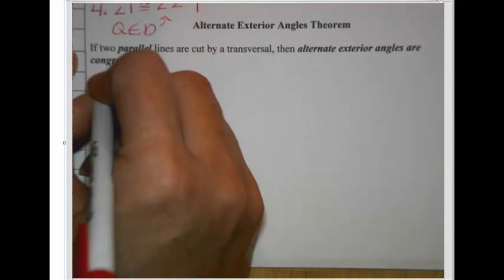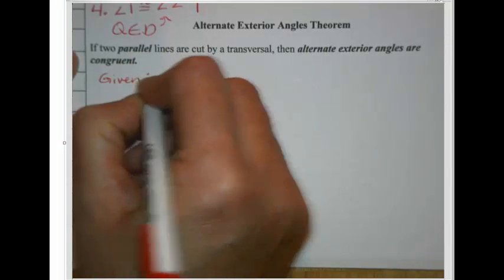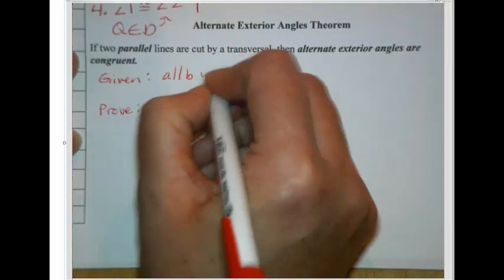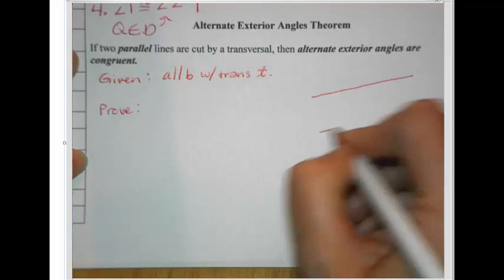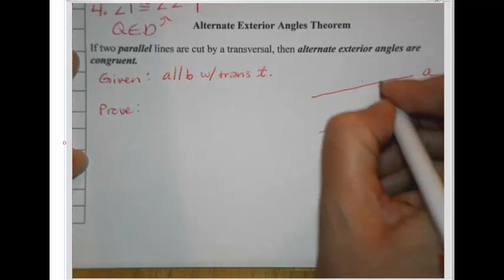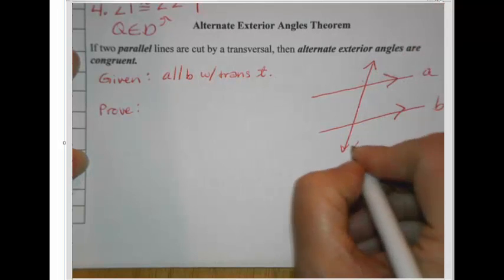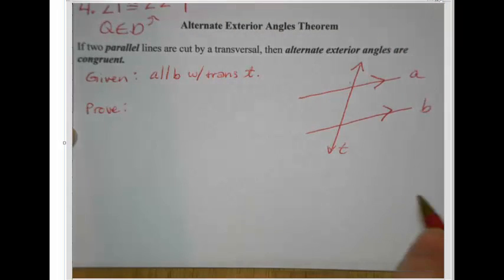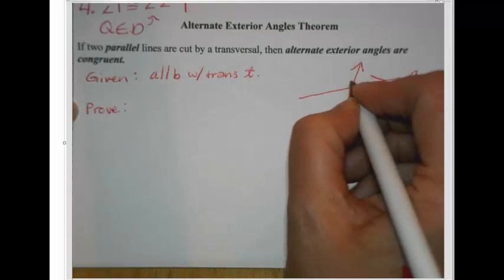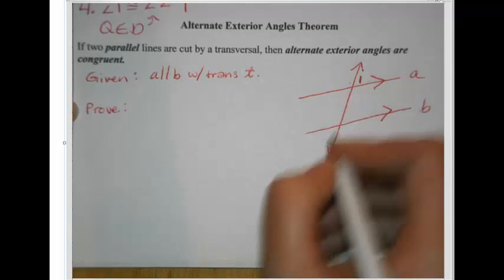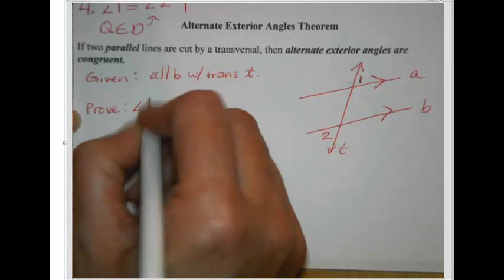Here are the things you should have. You should have a given statement and a proved statement. Your given should be: A is parallel to B with transversal T. You should have a diagram with lines A and B marked as parallel with arrows, and a transversal line T. Your goal is to prove that alternate exterior angles are congruent, so number a couple of alternate exterior angles — I'm putting 1 here and 2 here. You might have put them on opposite sides of the transversal; that's fine. Prove that angle 1 is congruent to angle 2.